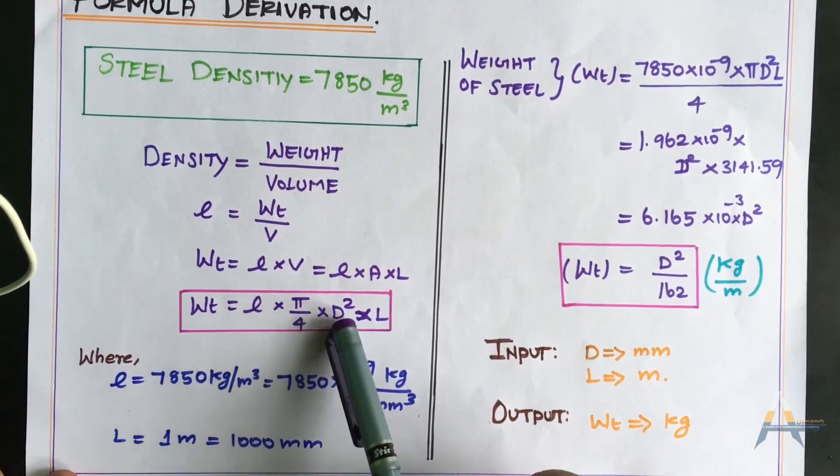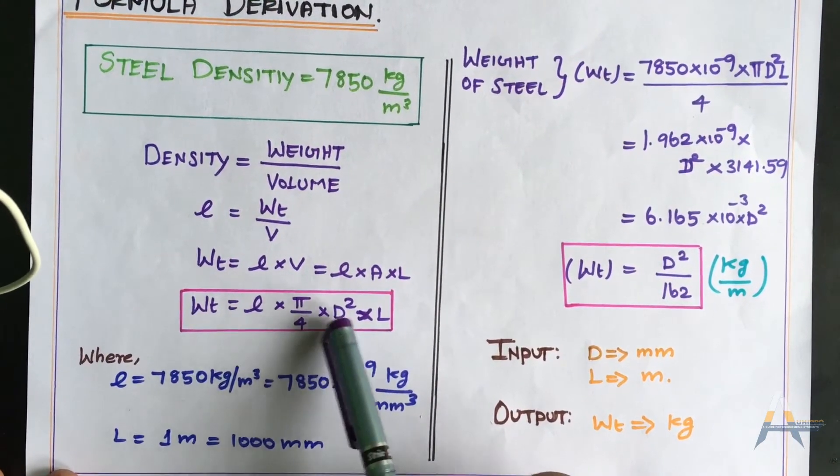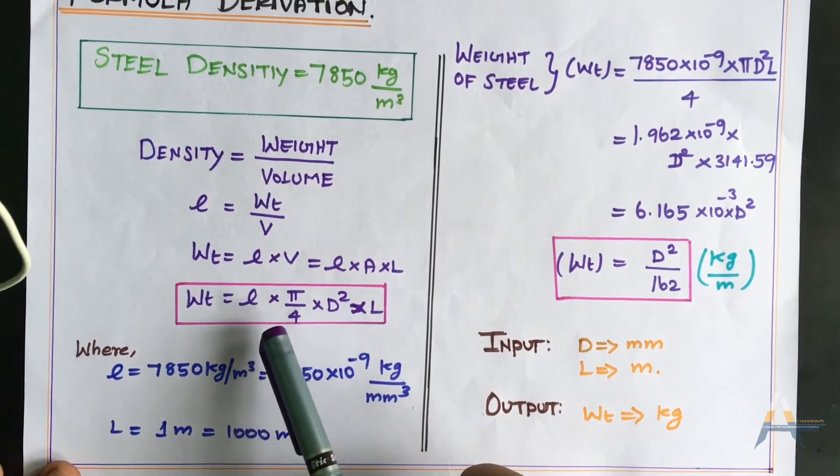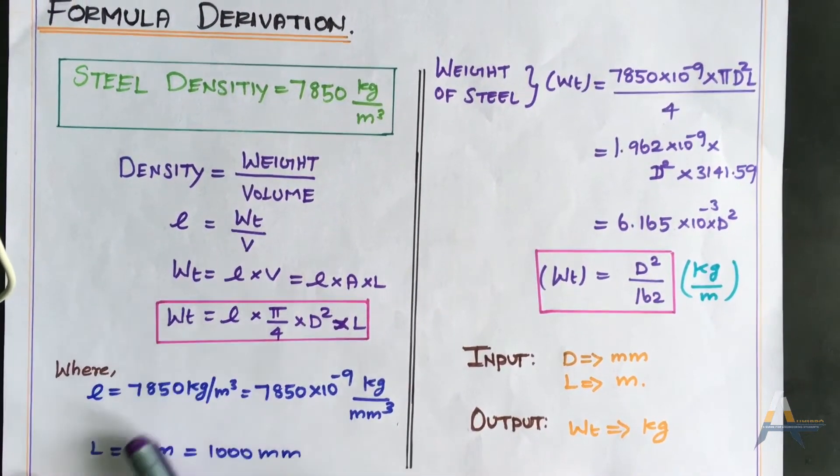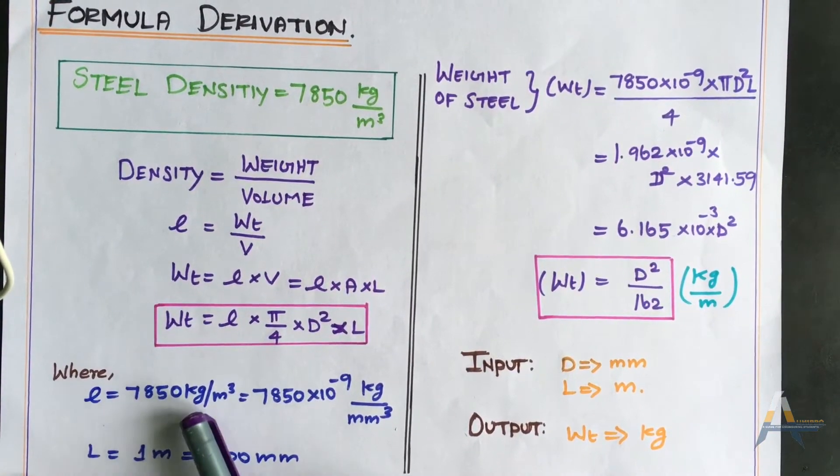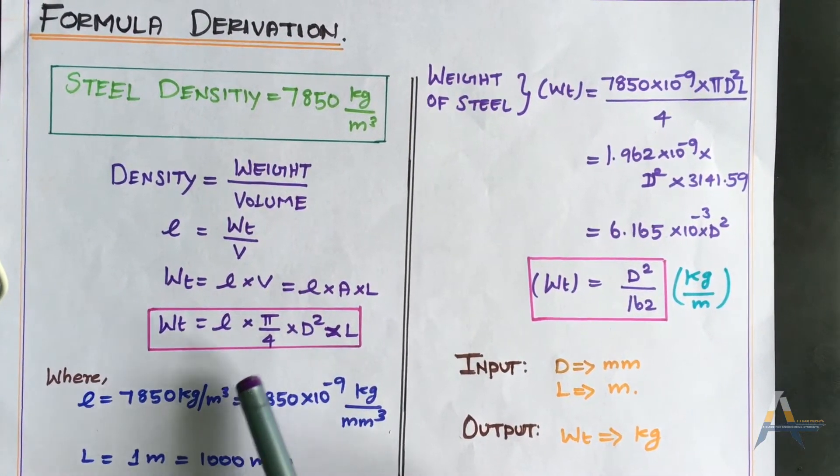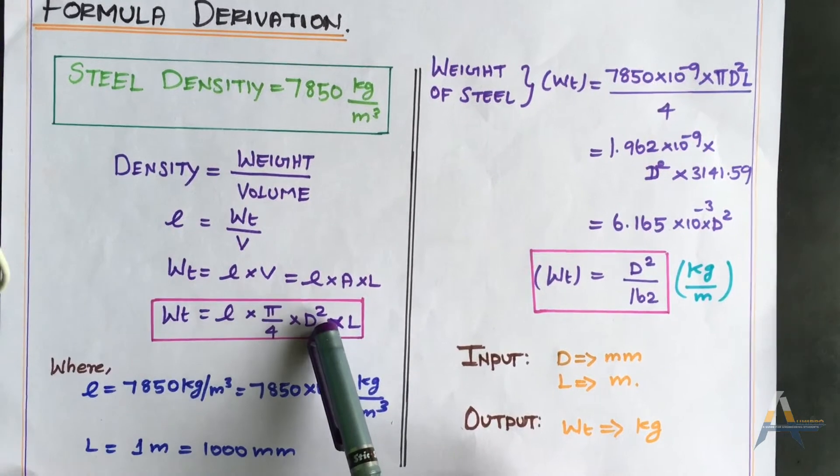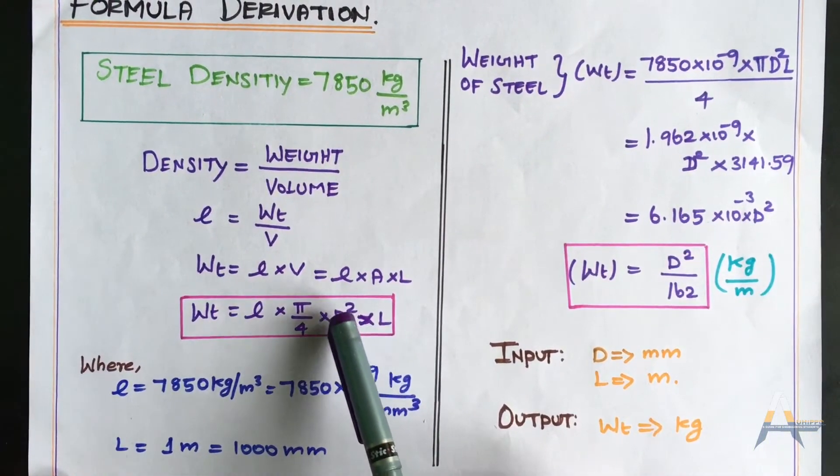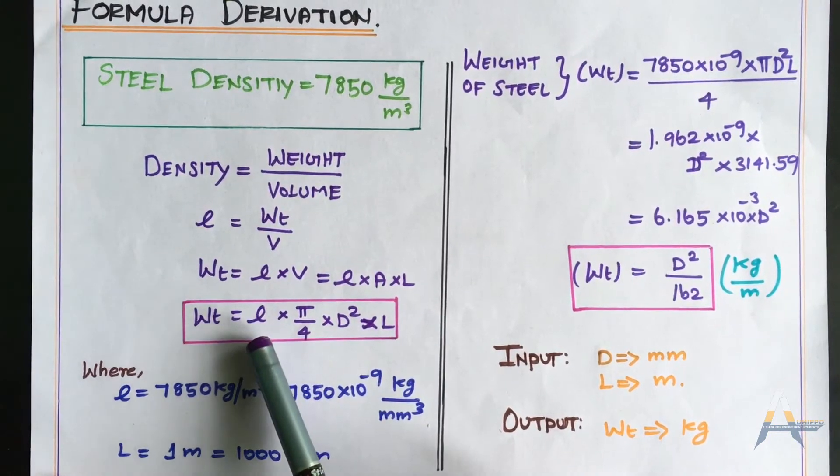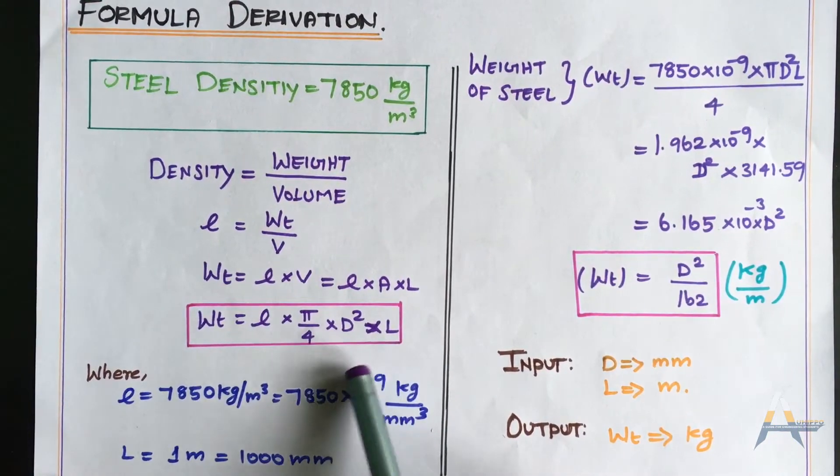Now we can substitute the known values. Density of the bar is 7,850 kg per m³. Since we have diameter in mm, we convert density to kg per mm³.